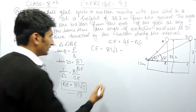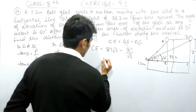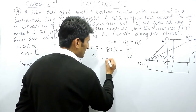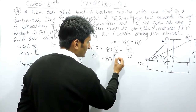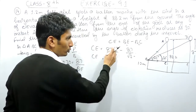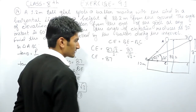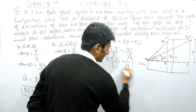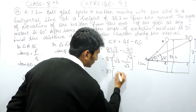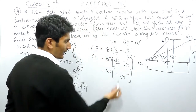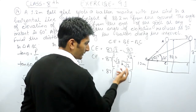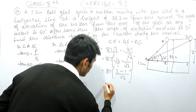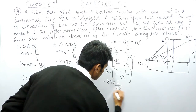To find CE, subtract BC from BE: CE = 87√3 minus 87/√3. To simplify, take 87 as common — we can't take √3 common because it's in the numerator in one term and the denominator in the other. So CE = 87 times (√3 minus 1/√3). Taking the LCM of 1 and √3, which is √3, we get: √3 times √3 is 3, and 1 times 1 is 1, giving 87 times (3 minus 1)/√3, which equals 87 times 2/√3.